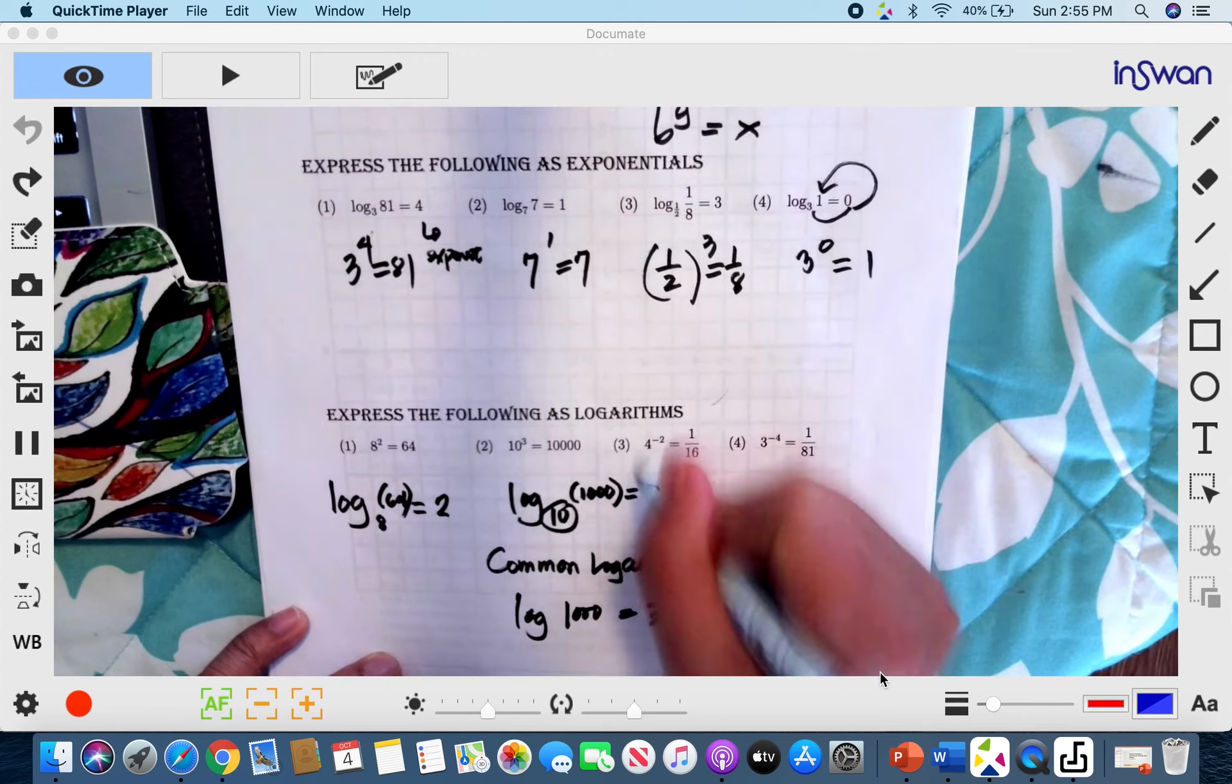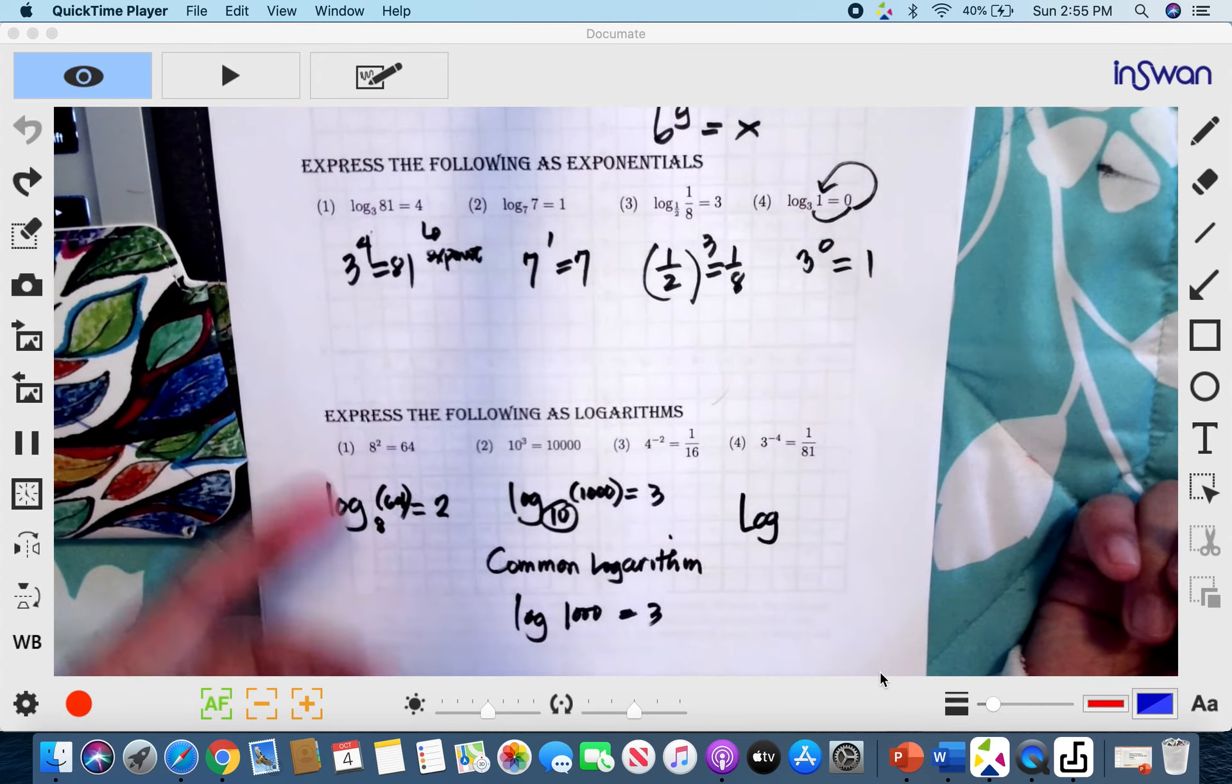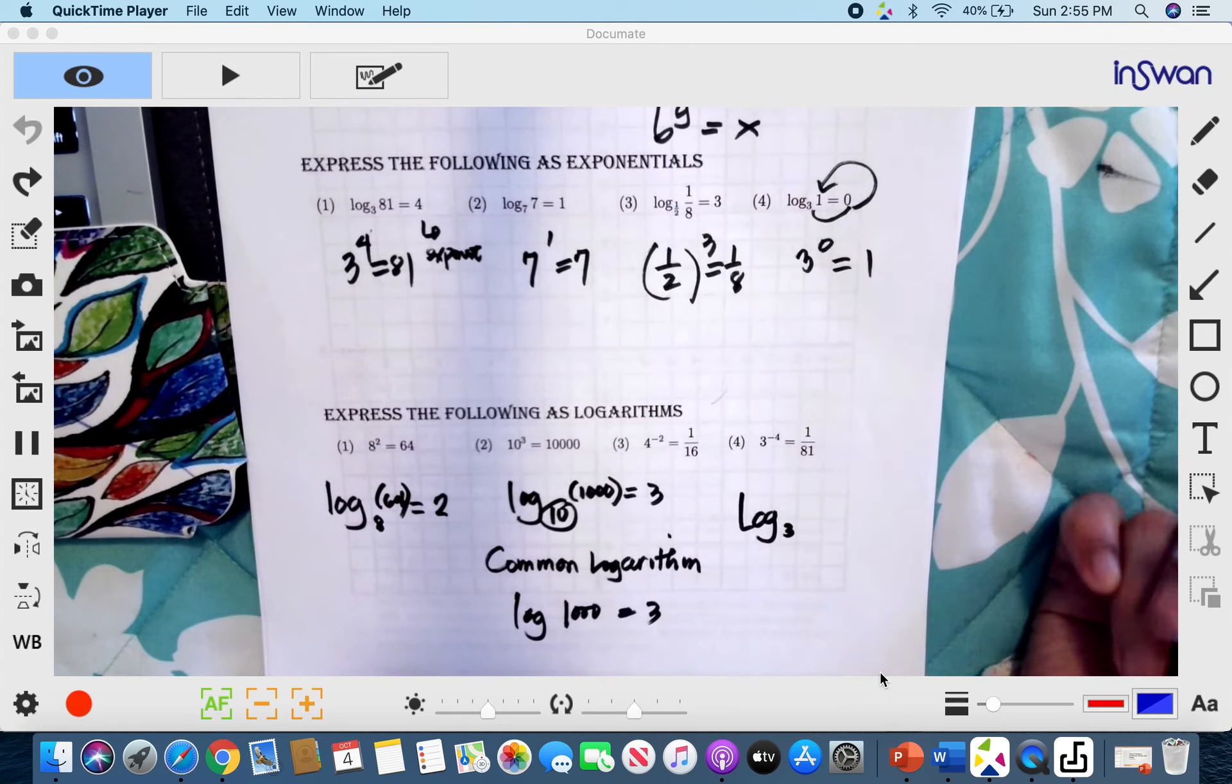So since I don't have space, I'll go to number 4. So you write logarithm. Because you're trying to express it in logarithm, it's just fitting to put logarithm. Our base is 3.